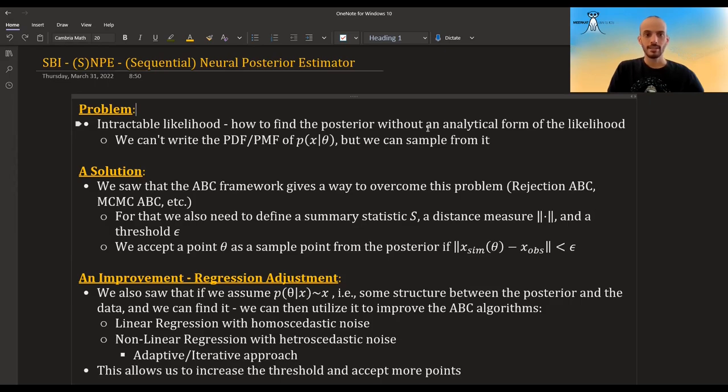And so we already saw that in the traditional ABC framework, there are certain ways to overcome this, either by Rejection ABC or MCMC ABC. We need to define sometimes a summary statistic, a distance measure, and a threshold.